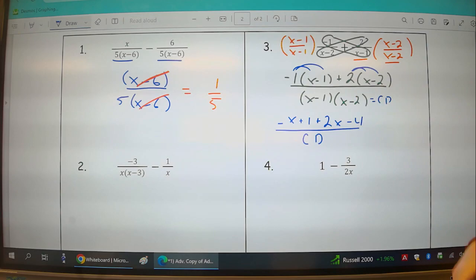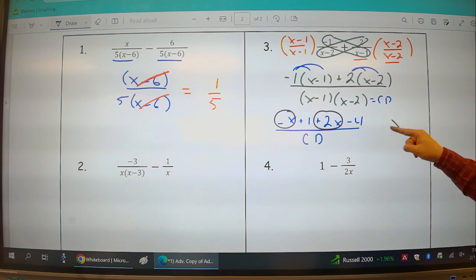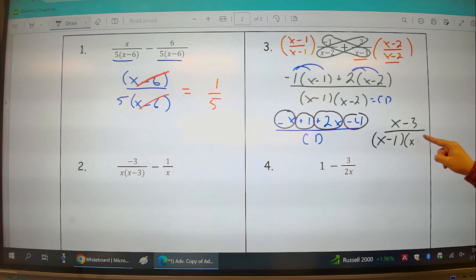We've done our distribution. Now we need to combine like terms. Negative x plus 2x, just x. 1 minus 4, minus 3 over x minus 1 times x minus 2. And there's my answer.